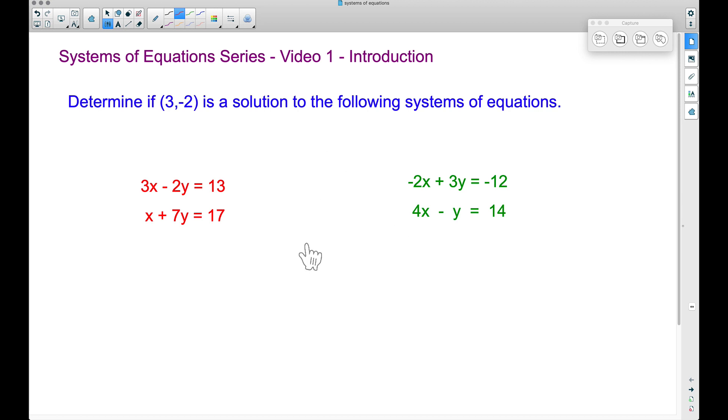As a matter of fact, we're not really going to solve anything in this video. If you look at the directions here, it says determine if (3, -2) is a solution to the following systems of equations. Now, this (3, -2) is actually referring to an ordered pair, x comma y.